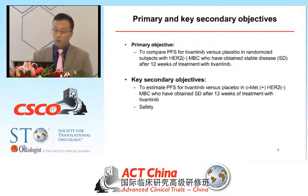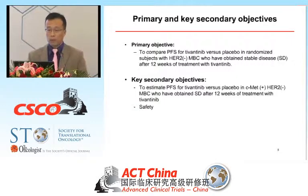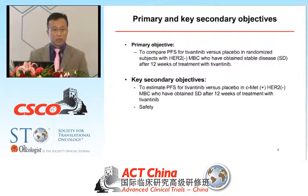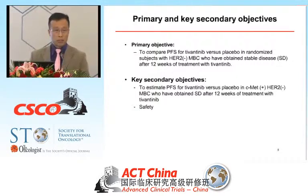The primary objective is to compare PFS between tivatinib and placebo in randomized subjects who achieved stable disease — those are the patients actually randomized. A key secondary objective focuses on the biomarker-positive subset of the ITT population, which will estimate the treatment effect and determine whether the biomarker is enriching for treatment benefit. The candidate biomarker in this case is C-MET.